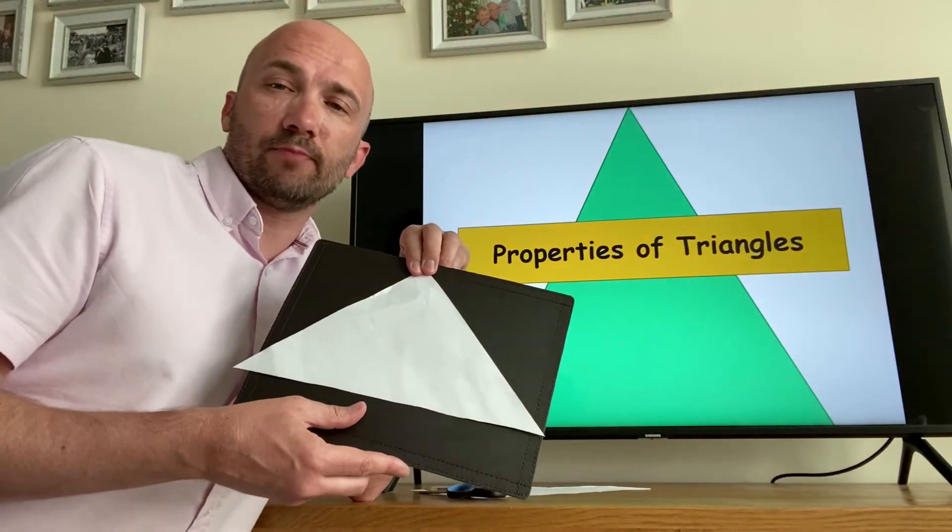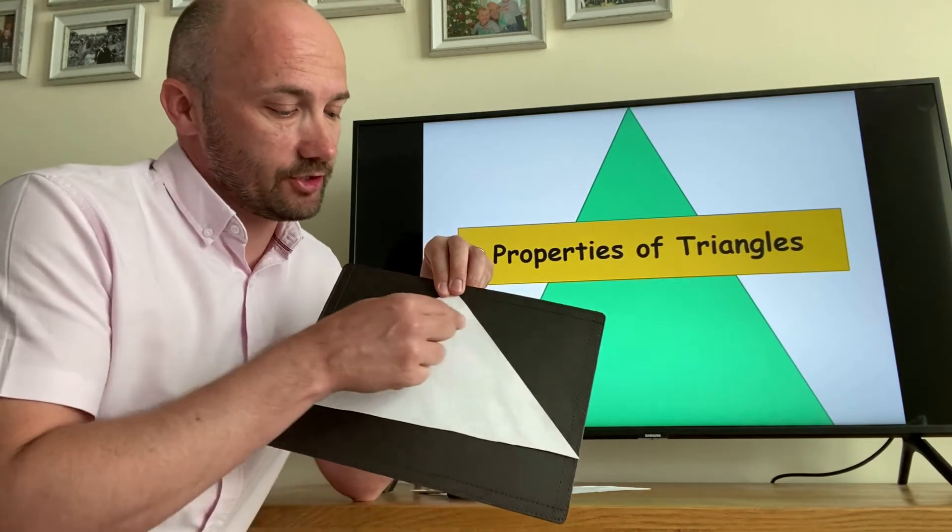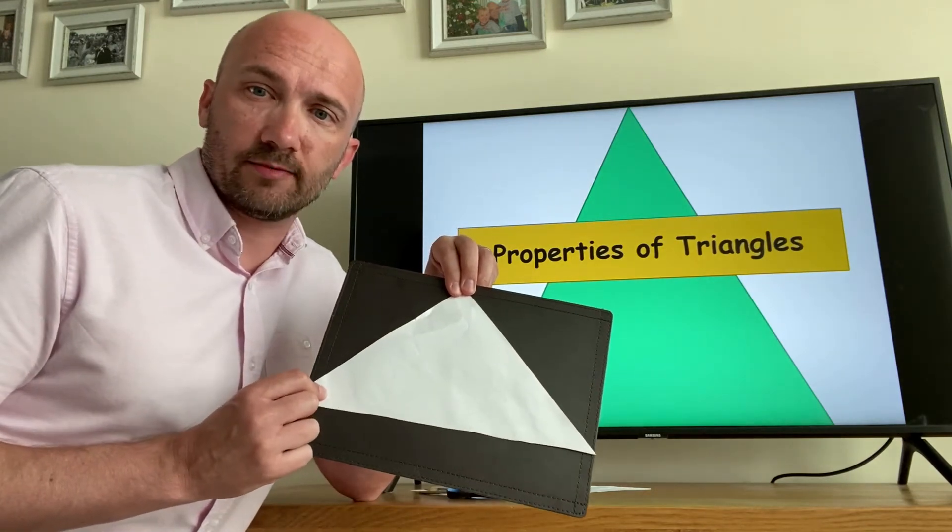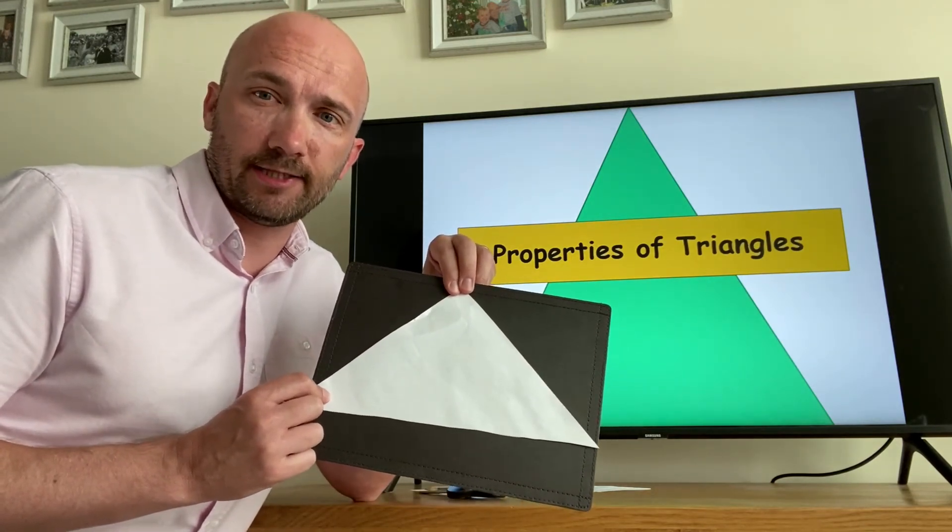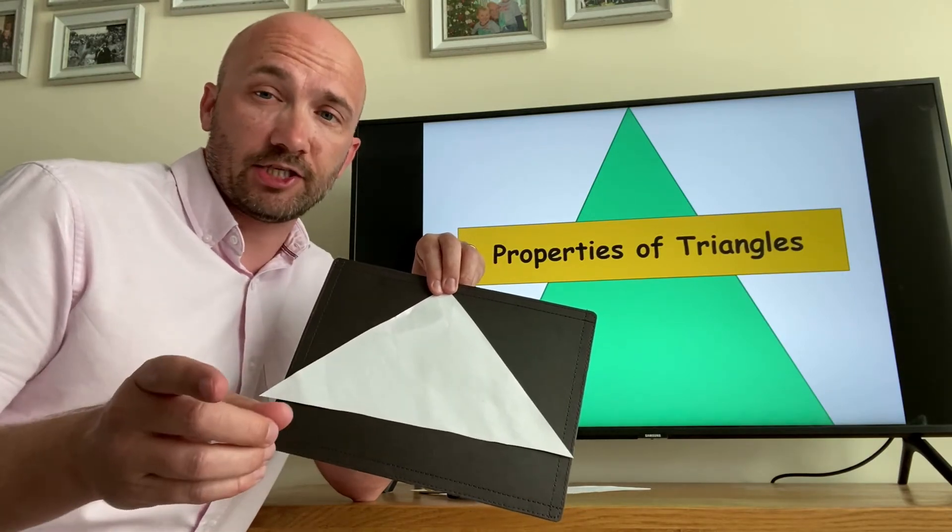Right, the last important thing to know about triangles is that the interior angles, the angles inside the triangle, all add up to 180, which is the same as angles on a straight line, which actually I can prove.